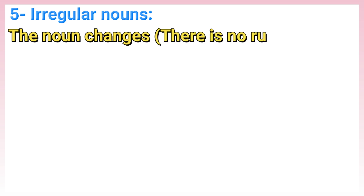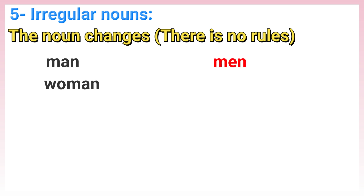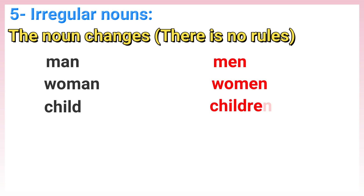Rule 5: Irregular nouns — the noun changes; there are no rules. Such as: man → men, woman → women, child → children.